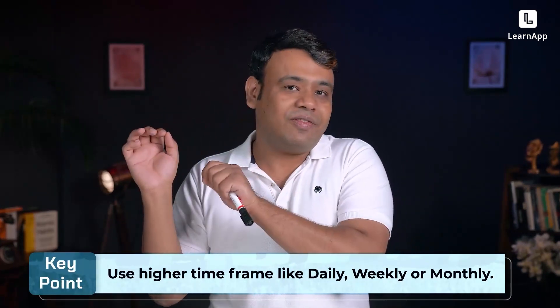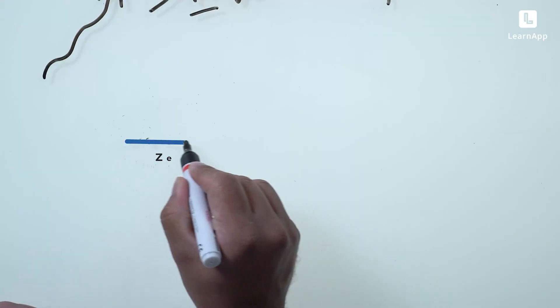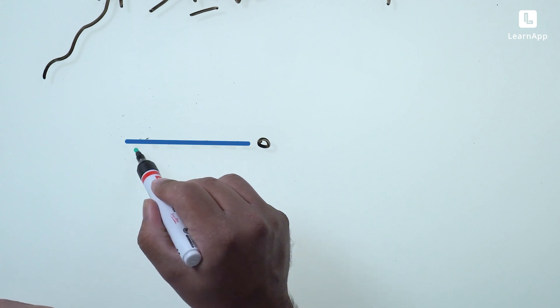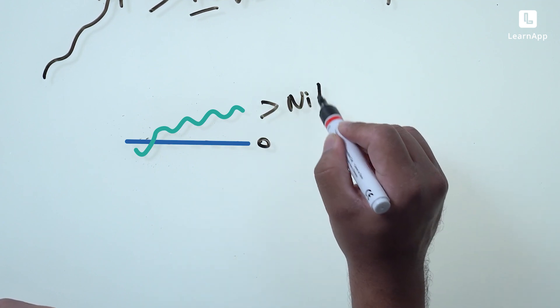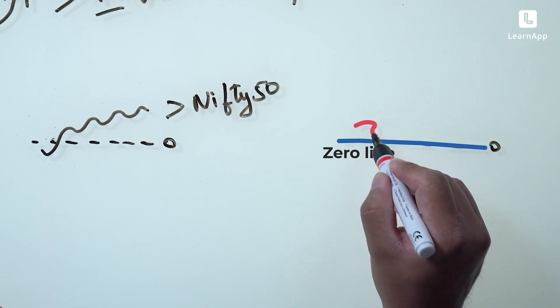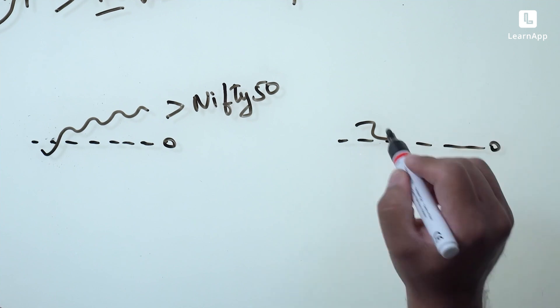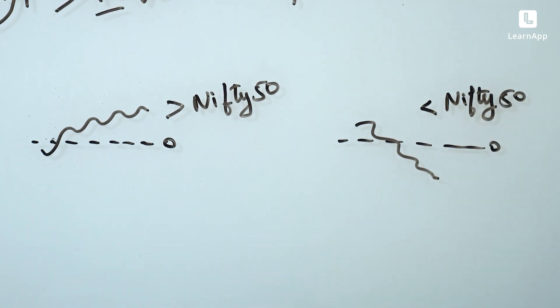Before moving forward, one important point: don't use this on intraday time frames. Please use it on daily, weekly, or monthly time frames only — then the relative strength tool will have significance. To keep things simple, I use the zero line on the indicator. Whenever the relative strength line is above the zero line, that security is performing better than Nifty 50. Whenever it is below the zero line, the security is underperforming.